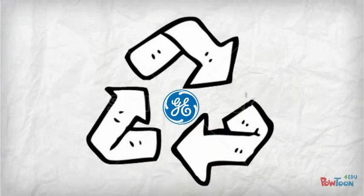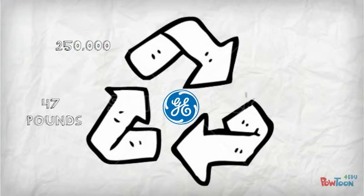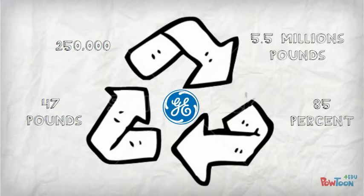Thanks to GE, close to 250,000 refrigerators have made their way through the UNTHA recycling technology system, where they save 47 pounds of material from a recycled refrigerator. An 85% reduction of waste. This has diverted 5.5 million pounds of material from U.S. landfills.